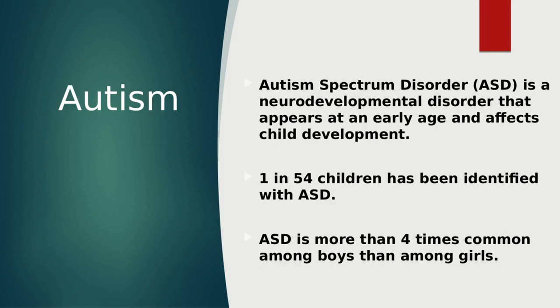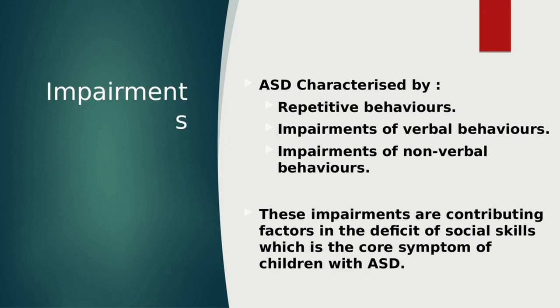Autism spectrum disorder is a neurodevelopmental disorder that appears at an early age and affects child development. According to the CDC, the Center for Disease Control and Prevention, 1 in 54 children has been identified with ASD. ASD is more than four times more common among boys than among girls. Each child with ASD may have different characteristics or a different combination of characteristics; however, some deficits are commonly observed in them.